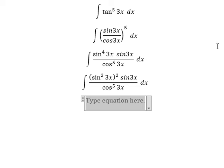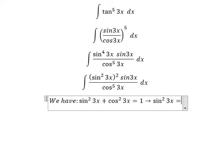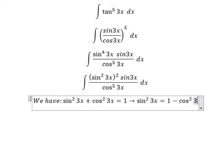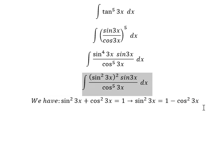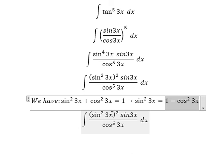Next we have the formula: sin^2(3x) + cos^2(3x) equals 1. So sin^2(3x) equals 1 - cos^2(3x). We'll substitute this in.